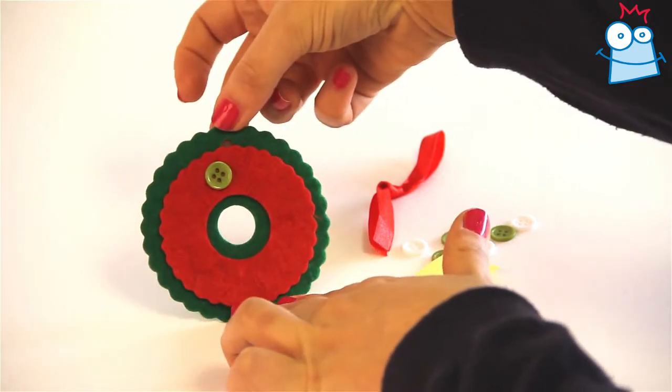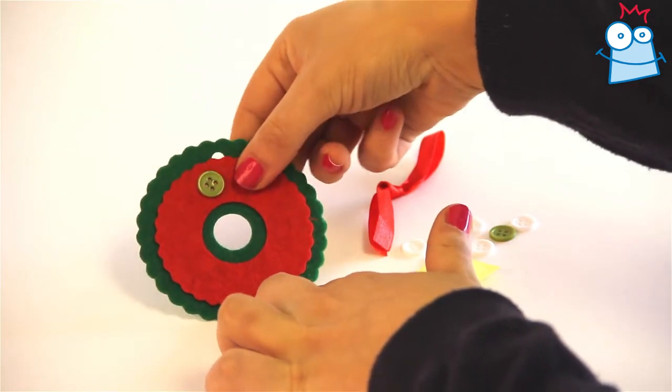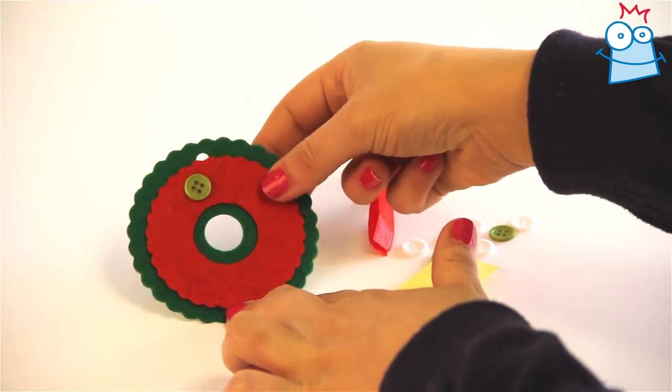Repeat this with all the buttons in the kit, alternating the color, and you'll have something that looks a little bit like this.